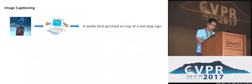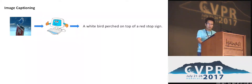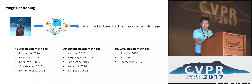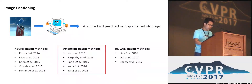Image captioning is a task that ultimately generates captions for an image. Many different models have been proposed in the past, stemming from neural-based methods to attention-based methods, and most recently RL-GAN-based methods. In this paper, we focus on the attention-based approaches.